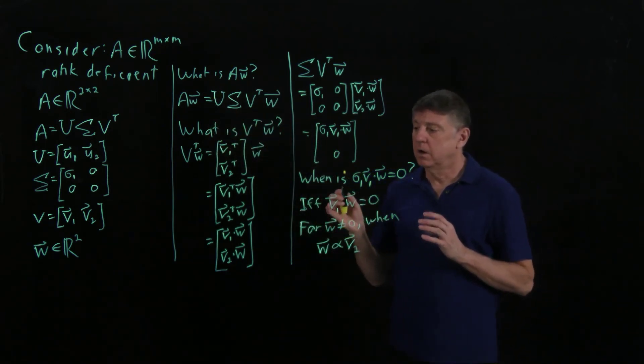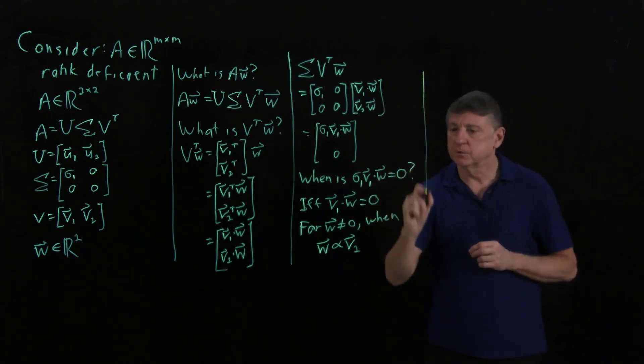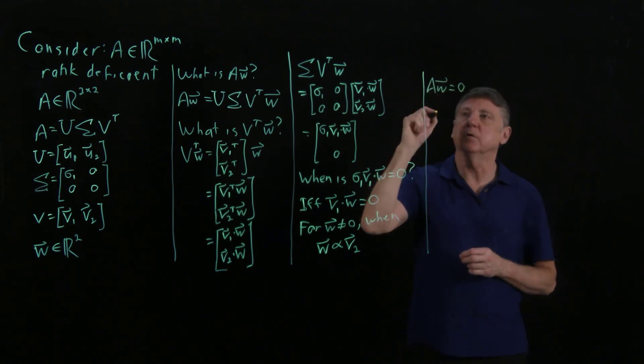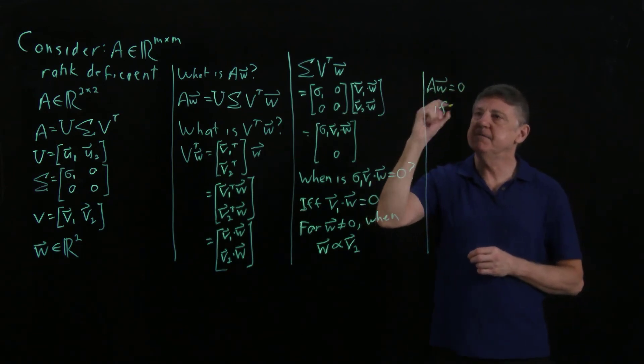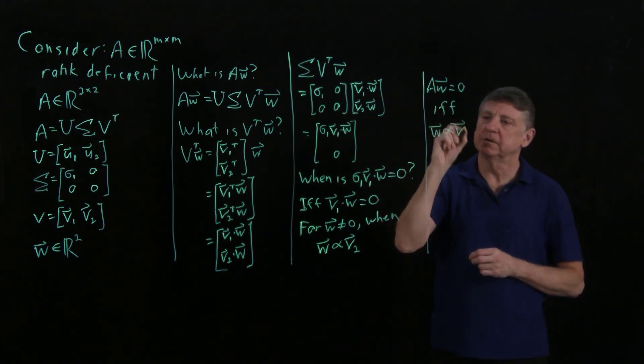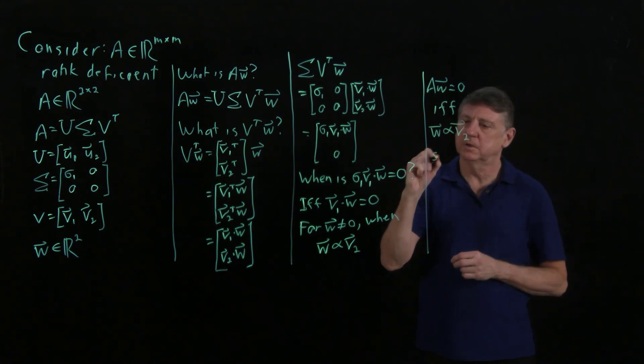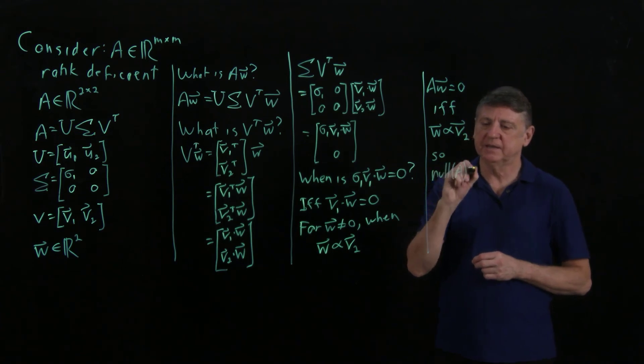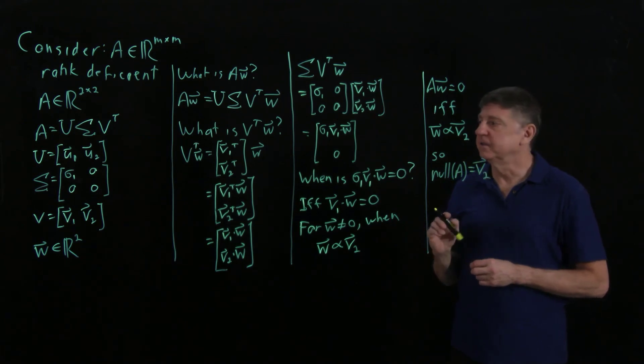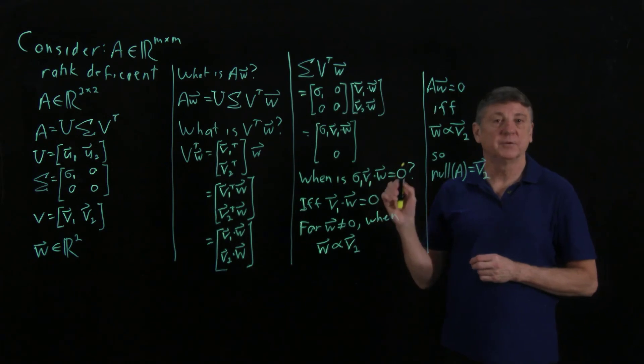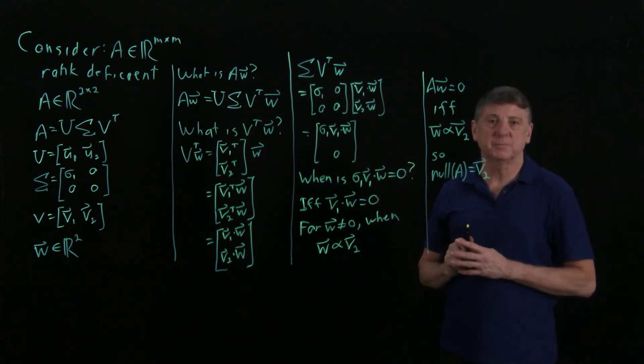And so, I now know, that AW equals 0 if and only if W is proportional to V2. So that means that the null space of that matrix A is any scalar multiple of column number 2 of the right singular matrix of the singular value decomposition.